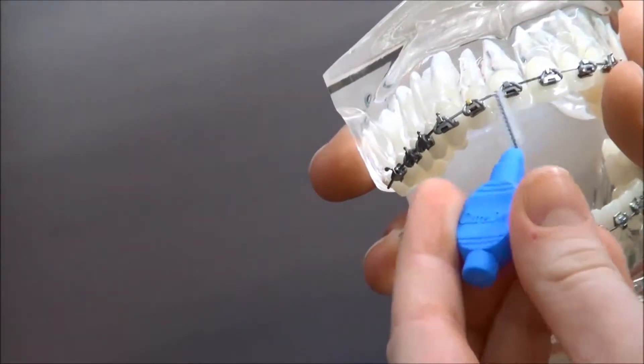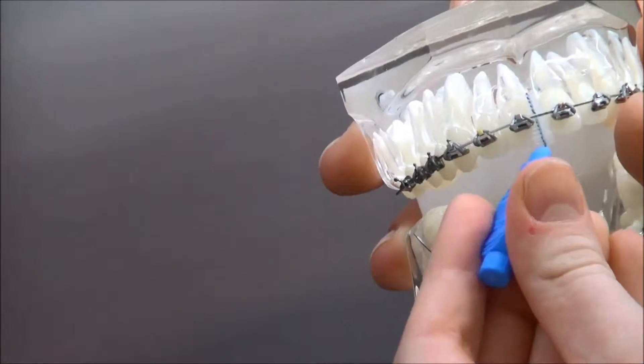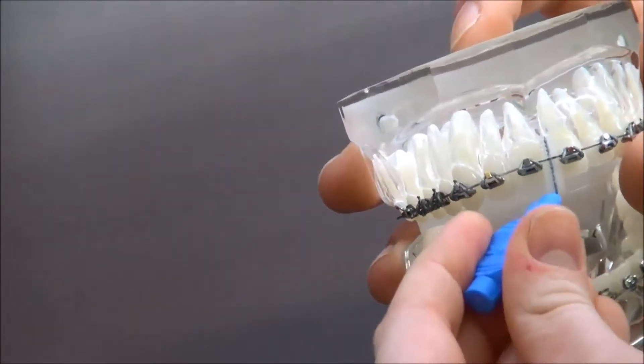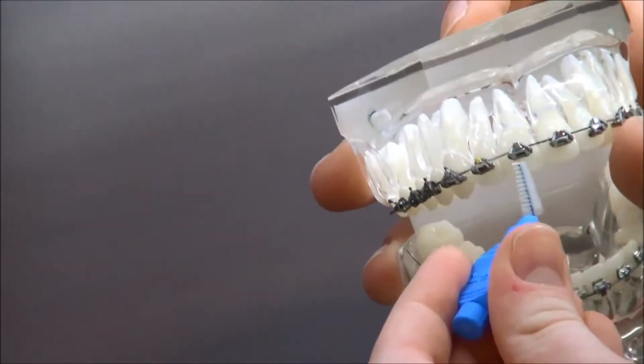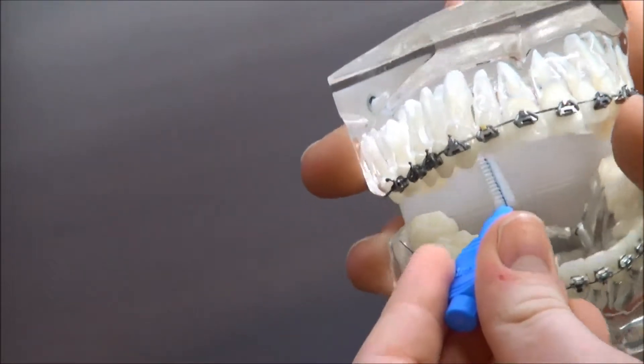What you're going to be doing is using the brush, taking it up underneath the wire and gently rubbing it up against each bracket underneath the wire. You should be doing this under every single tooth.